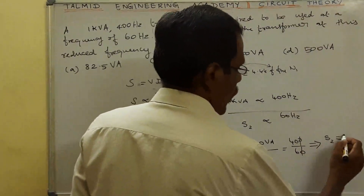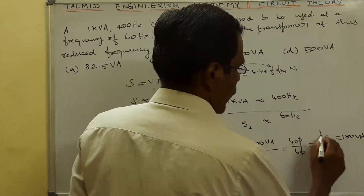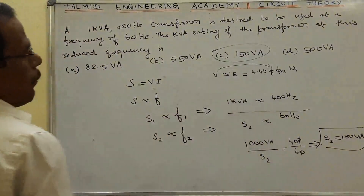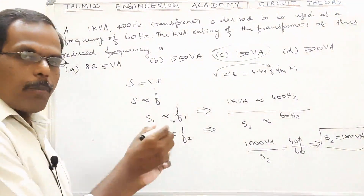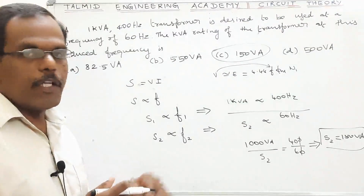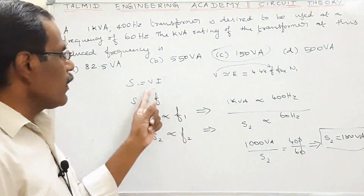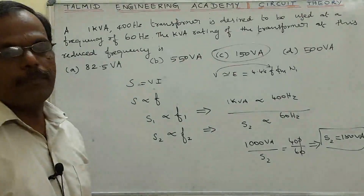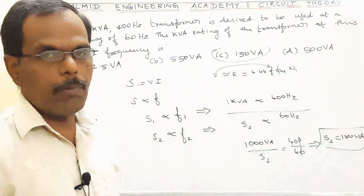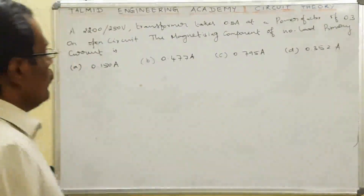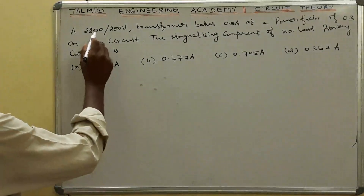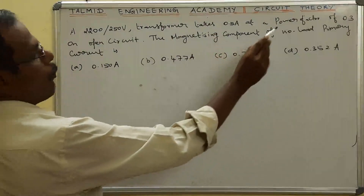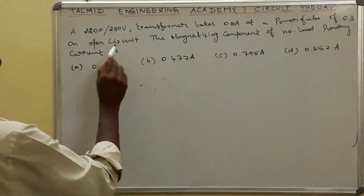S2 equals 150 VA. That is the answer — 150 VA. Now moving on to the next problem: a 2200 volt, 50 Hz transformer takes 0.5 A at a power factor of 0.3 on open circuit.